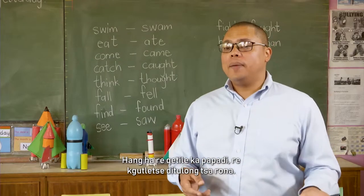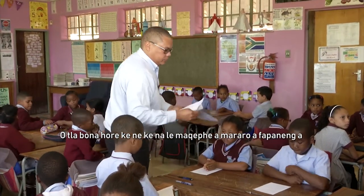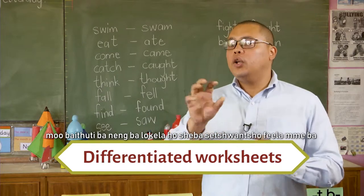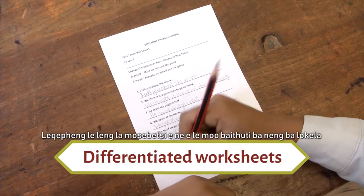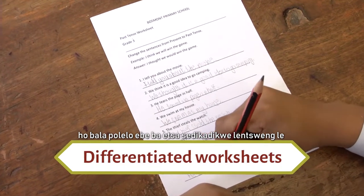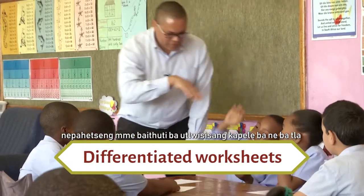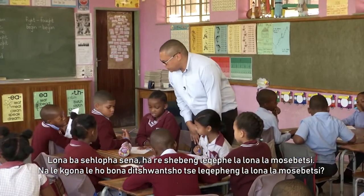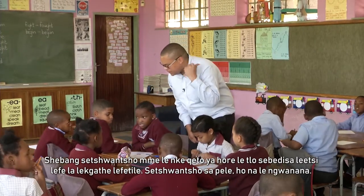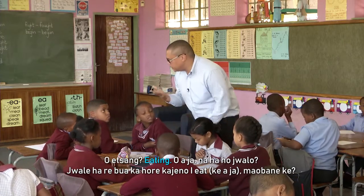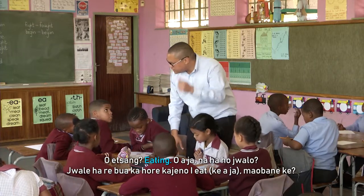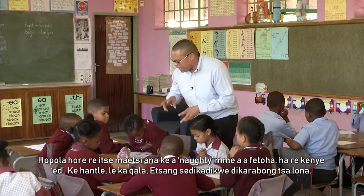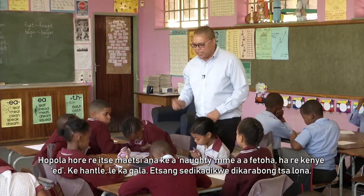Once we were done with the game, we went back to our desks. I had three different worksheets for all the learners. One worksheet was where learners just had to look at the picture and circle the correct word. Another worksheet was where learners had to read the sentence and then circle the correct word. The stronger learners would then have to rewrite the sentence — a question and an answer. Can you all see the pictures on your worksheet? You look at the picture and decide which past tense verb to use. The first one — there's a girl. What is she doing? She's eating. So if we say "today I eat," yesterday I ate. Is it "ate" or "eated"? "I ate." Remember, these are the naughty verbs — they change, we don't add "ed." Mr. Khos differentiated the worksheets so that each child could have a sense of independence and apply their newly learned concepts, ranging from circling the correct answer to completing full sentences.